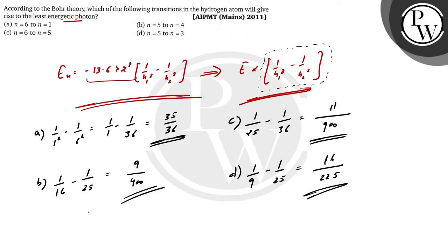If you see all the values, but if I see all the values, then the first one is 35 upon 36. This will be 0.972 and so on.